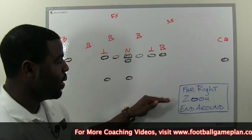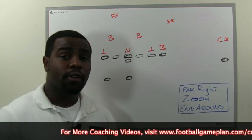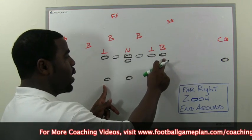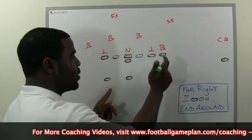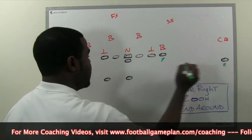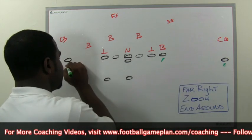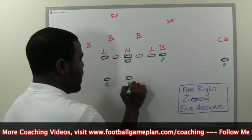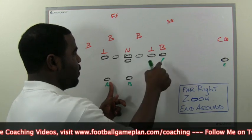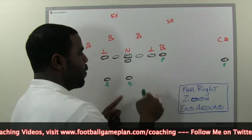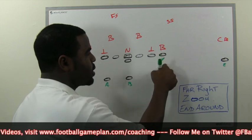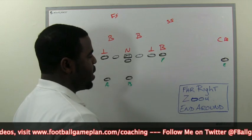Far Right Zoom End Around. The reason why it's called Far Right: the tailback is furthest away from the tight end. So this is your Y, this is your Z, and this is your X — A back, B back — tailback furthest away from the tight end, far formation, far right, designating the strong side of the formation.